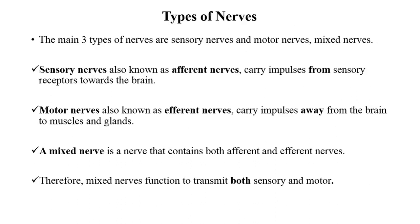On the basis of their function, nerves are divided into sensory nerves, motor nerves, and mixed nerves. The sensory nerve is also called the afferent nerve, which carries impulses from sensory receptors towards the brain. The motor nerve is known as the efferent nerve, which carries impulses away from the brain to muscles and glands.